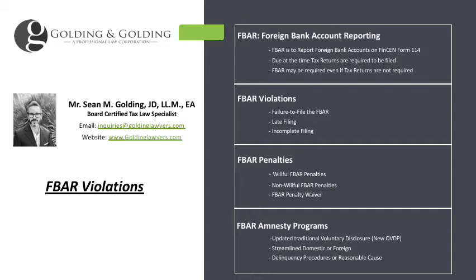There are two different categories of civil penalties: willful and non-willful. The non-willful penalties have four layers: a warning letter in lieu of penalty, a single $10,000 penalty for all of your FBAR violations, a $10,000 penalty per year, and a $10,000 penalty per account per year, up to a certain value — normally 50% is the most they can go, according to the Internal Revenue Manual. That $10,000 is subject to cost of living adjustments; right now it's around $12,000 to $13,000.